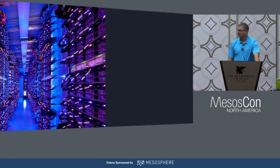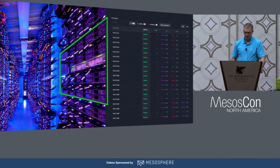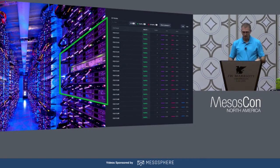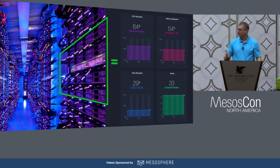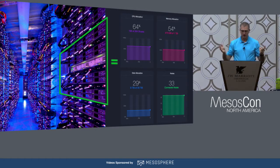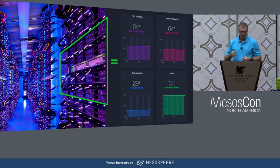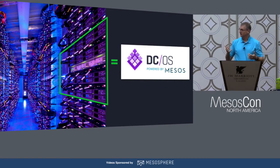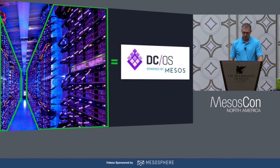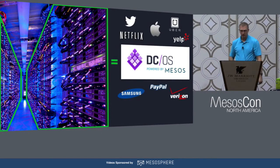Our massive-scale approach is DCOS. If you take a data center or rack of machines and treat it as one logical unit — one operating system, thus the Data Center Operating System — instead of scheduling software to run on specific machines, we treat it as a pool of resources. We don't look at it as 33 machines; we look at it as a whole bunch of RAM, storage, and CPU resources that we schedule work to run on.